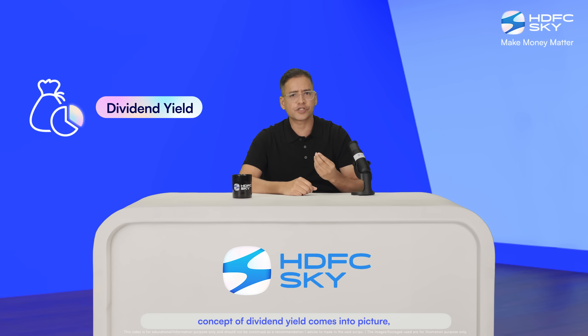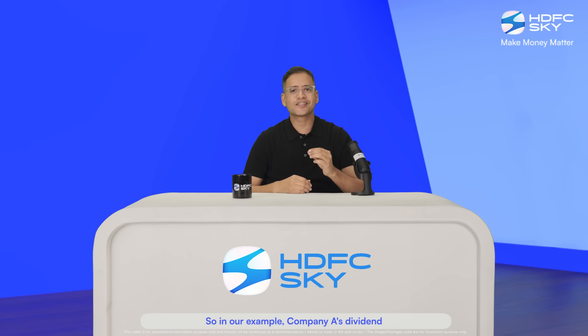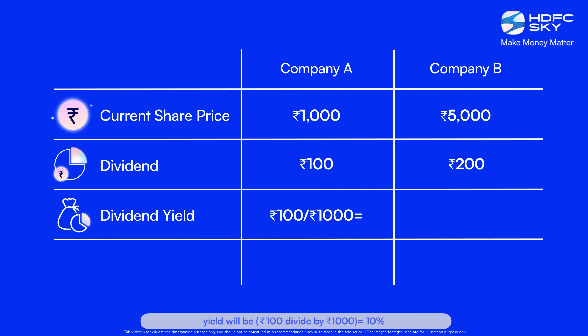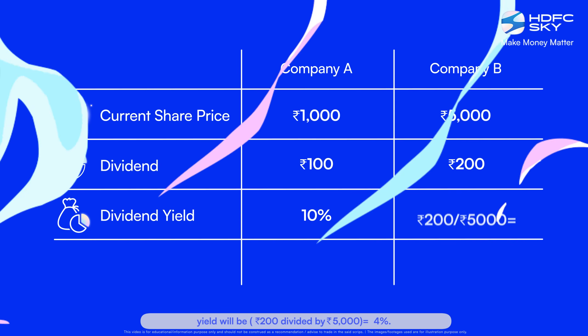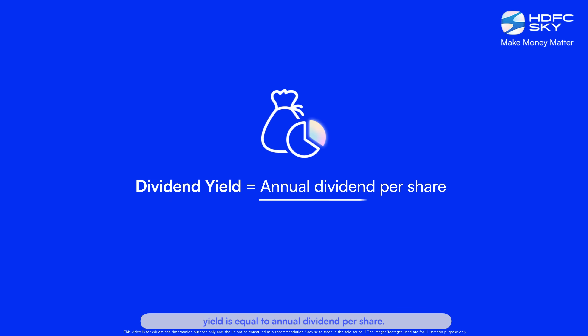This is where the concept of dividend yield comes into picture, which allows you to compare dividends given by different companies irrespective of their share price. In our example, company A's dividend yield will be 100 rupees divided by 1000 rupees equals 10 percent, and company B's dividend yield will be 200 rupees divided by 5000 rupees equals 4 percent. So dividend yield equals annual dividend per share divided by current share price.